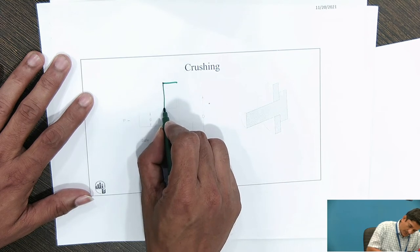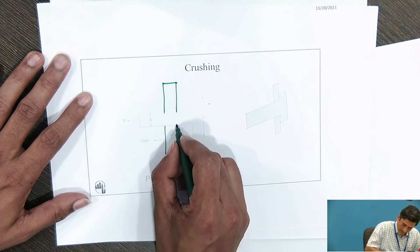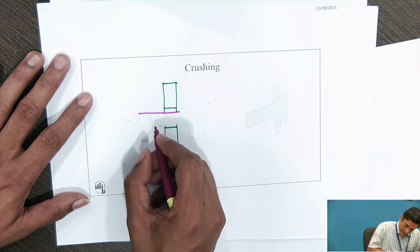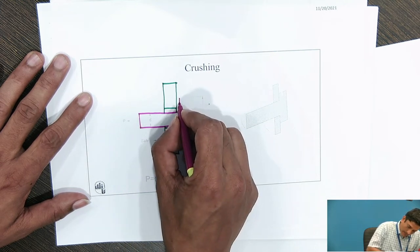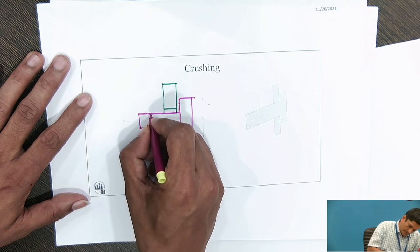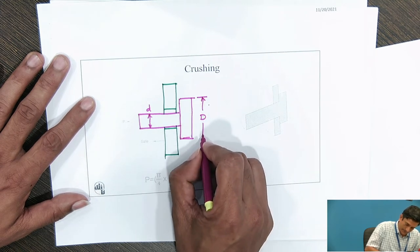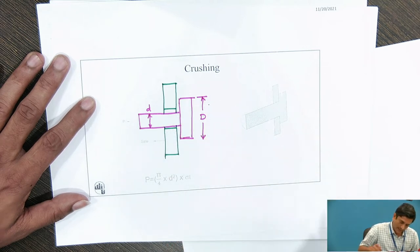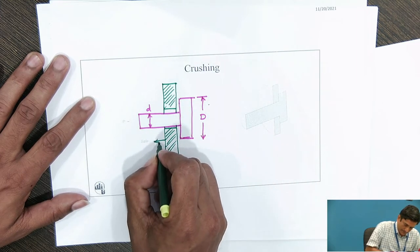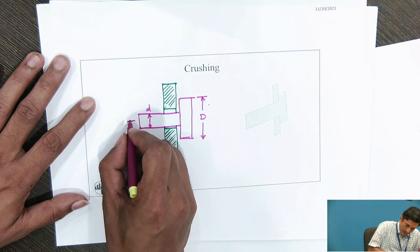Let us try with some other view. This is the fixed link I was talking about. And this is the pin. The diameter of this pin is small d and its head is capital D. The bracket we are not going to consider for design. This is safe, I am going to assume.